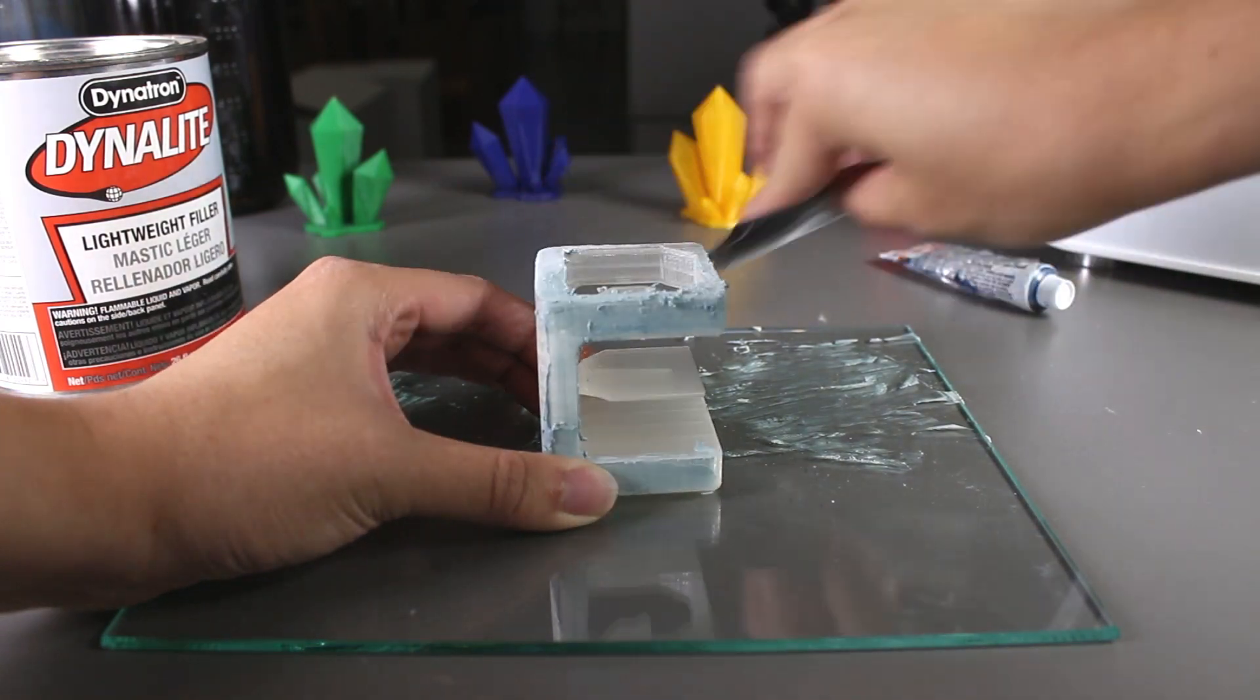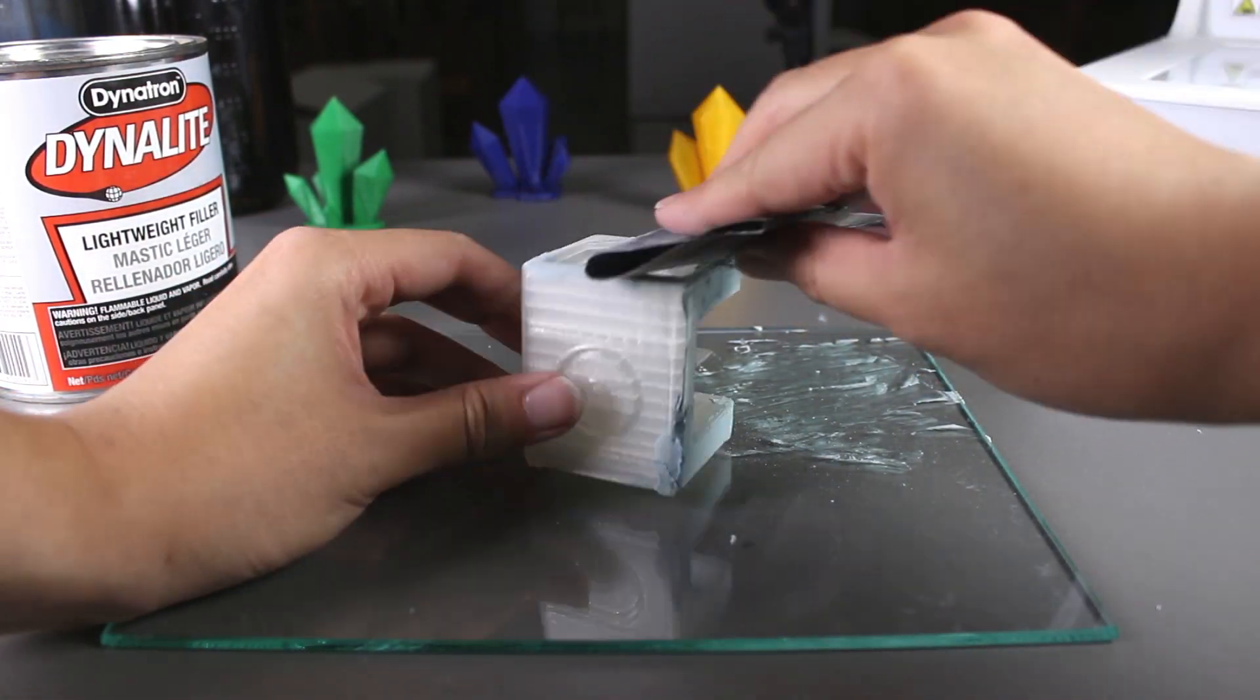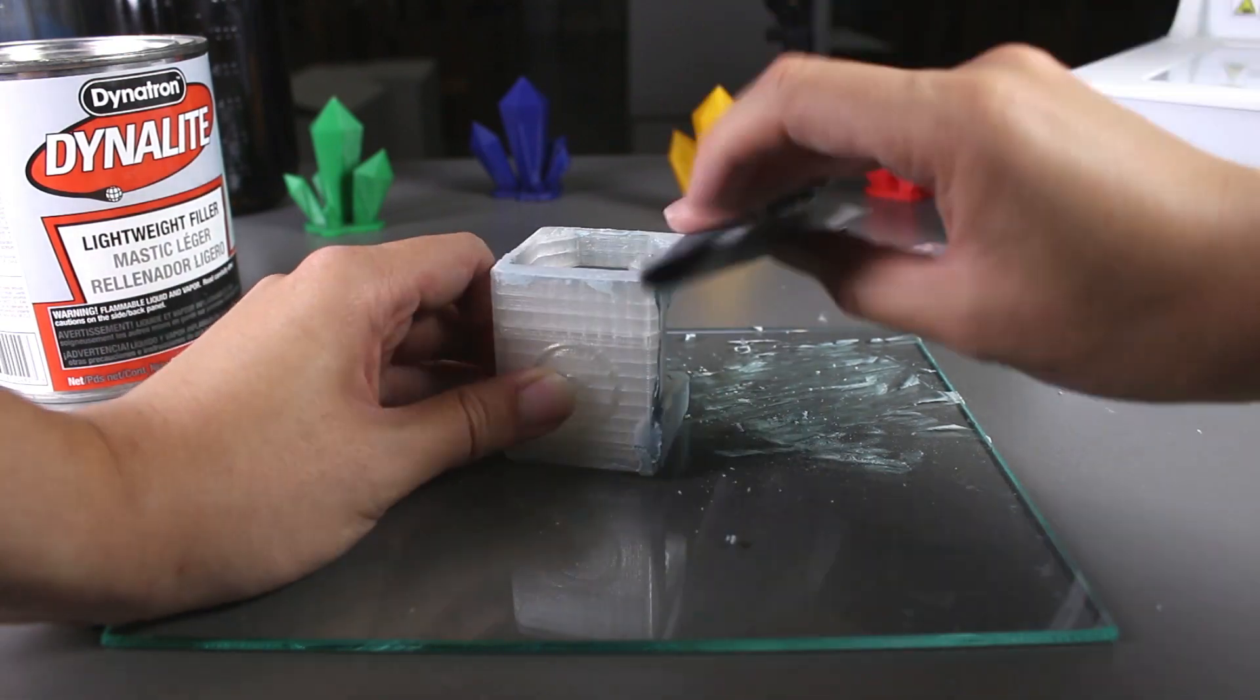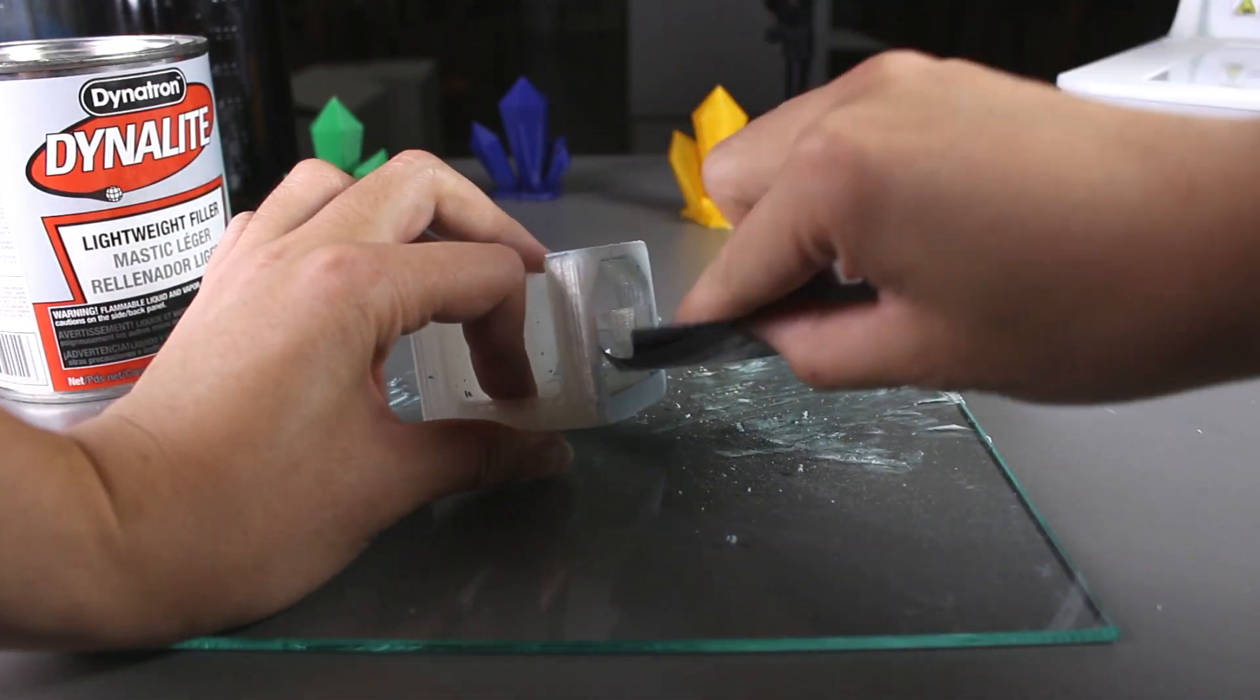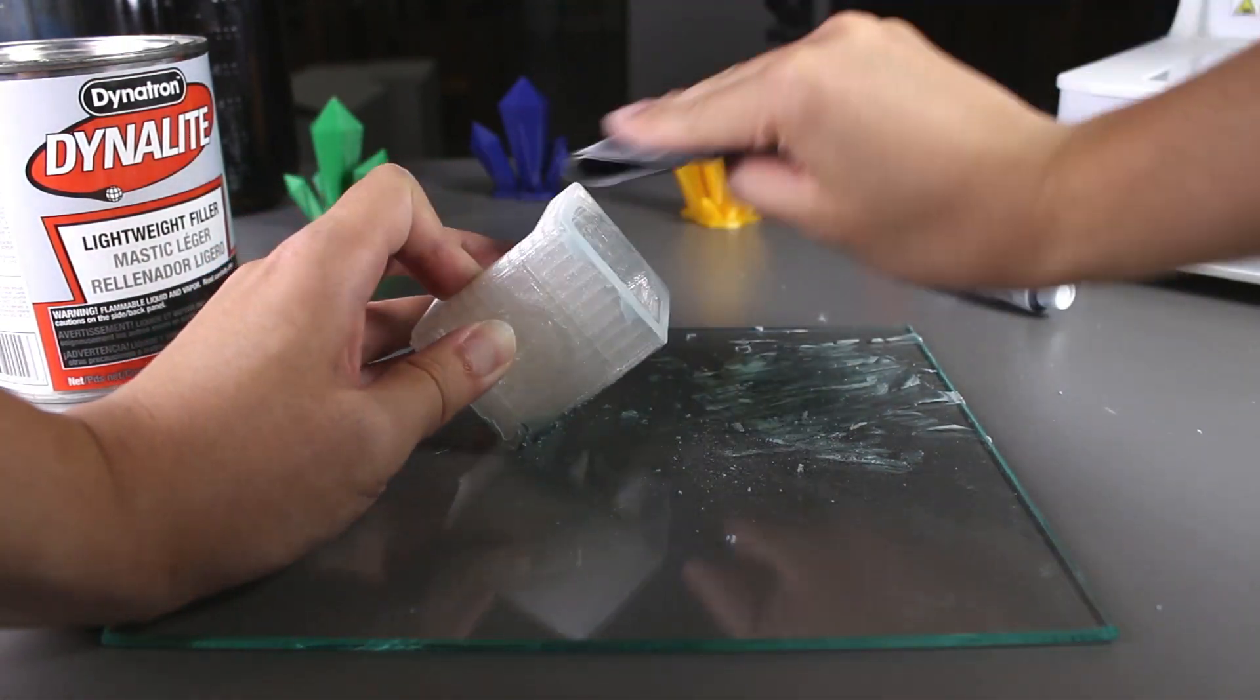After the primer dries and hardens, we can start sanding the surface down. After we've done that, we'll spray it with a coat of primer to see how well it went.